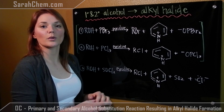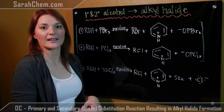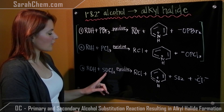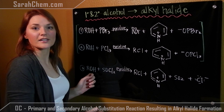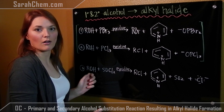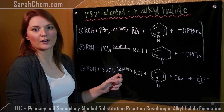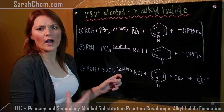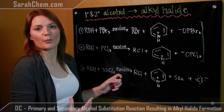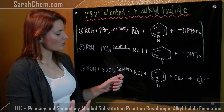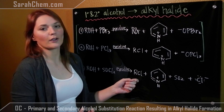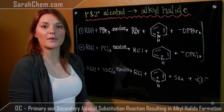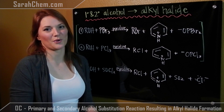Later on in this tutorial, we'll take a look at that mechanism. The third and final reagent is SOCl2, reacting with your primary or secondary alcohol, once again in the presence of pyridine. When we take a look at these mechanisms, we'll see why pyridine is so important. At the end of this reaction, you get out your alkyl chloride. So we're going to take a look at these two types of mechanisms as we continue on in the tutorial.